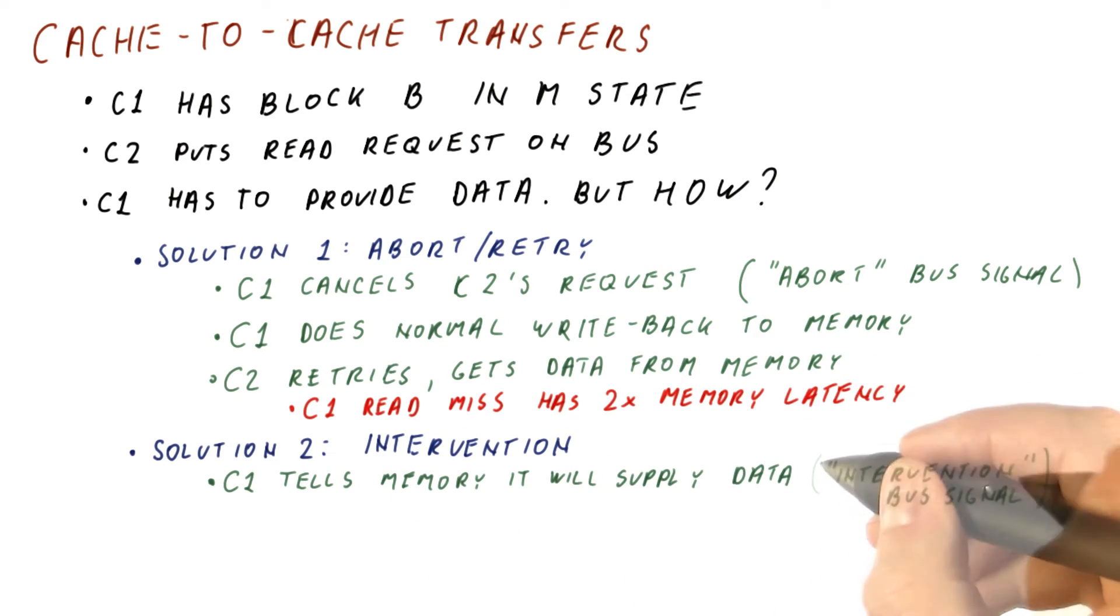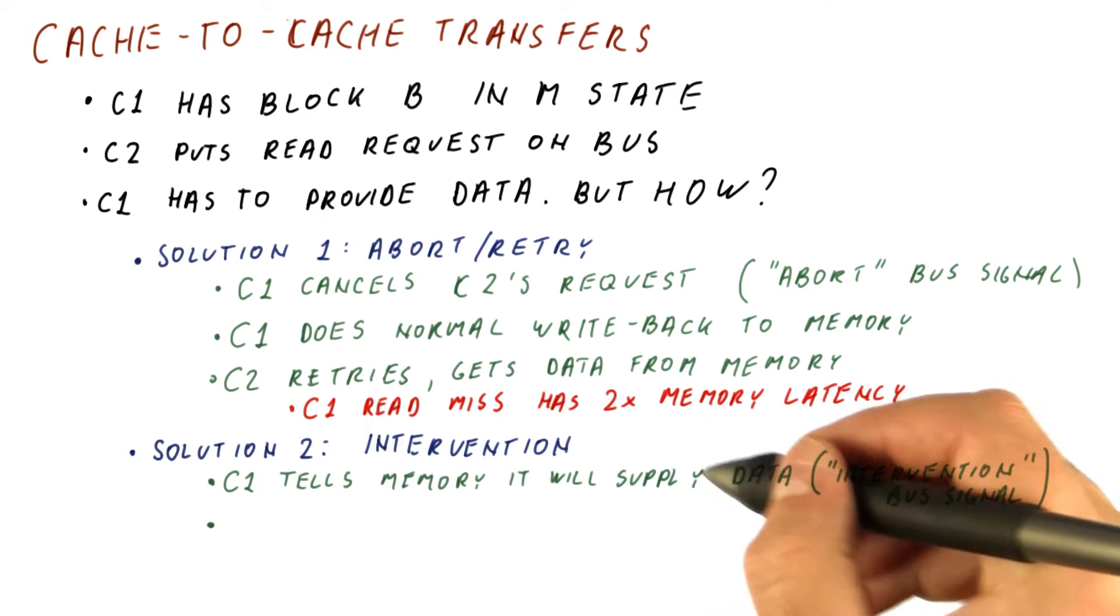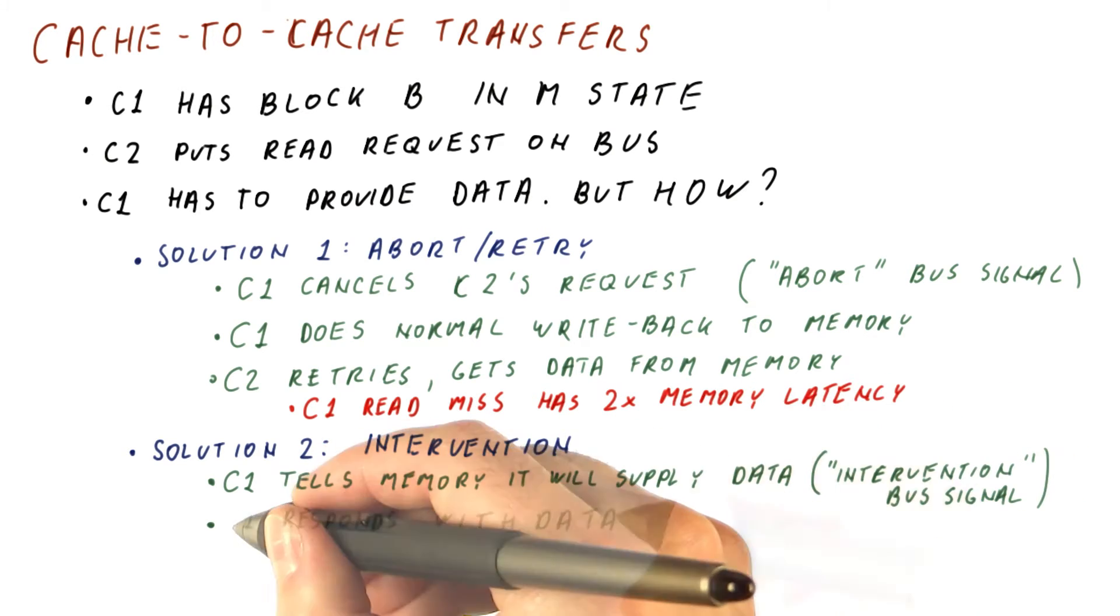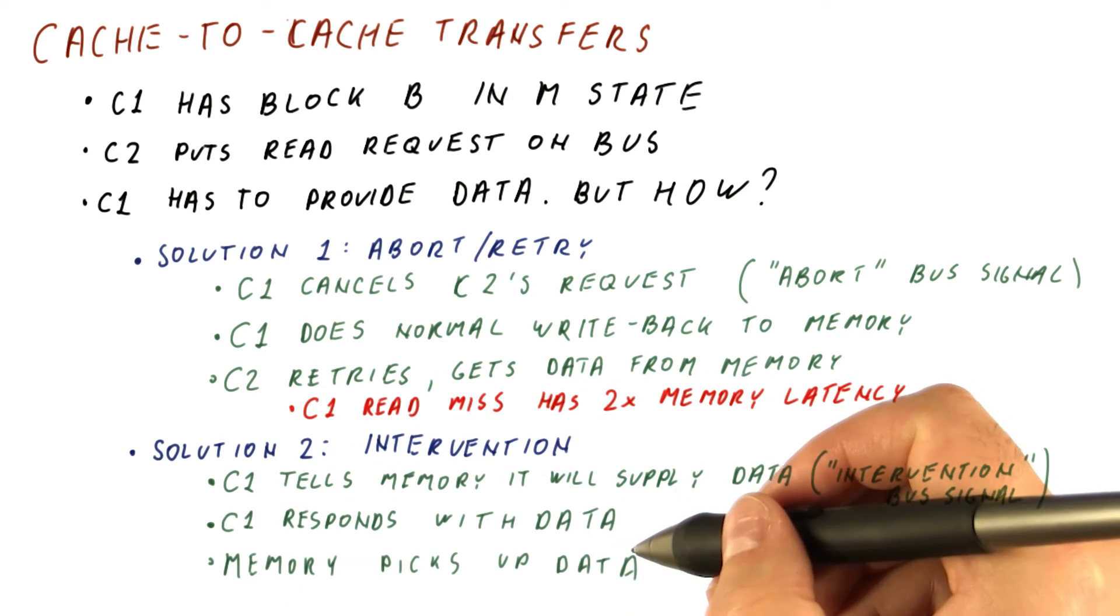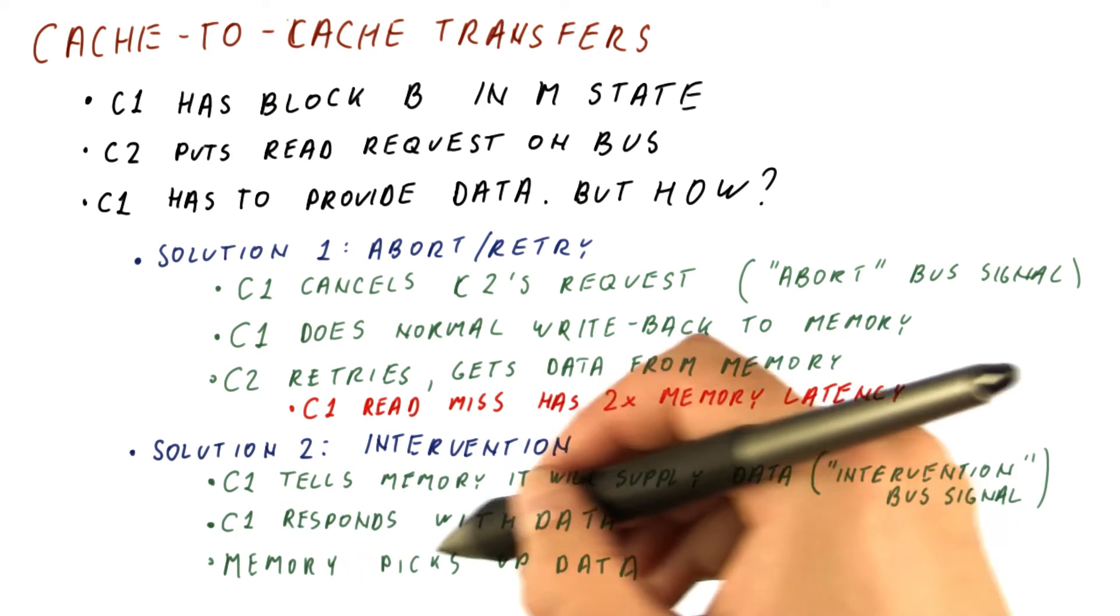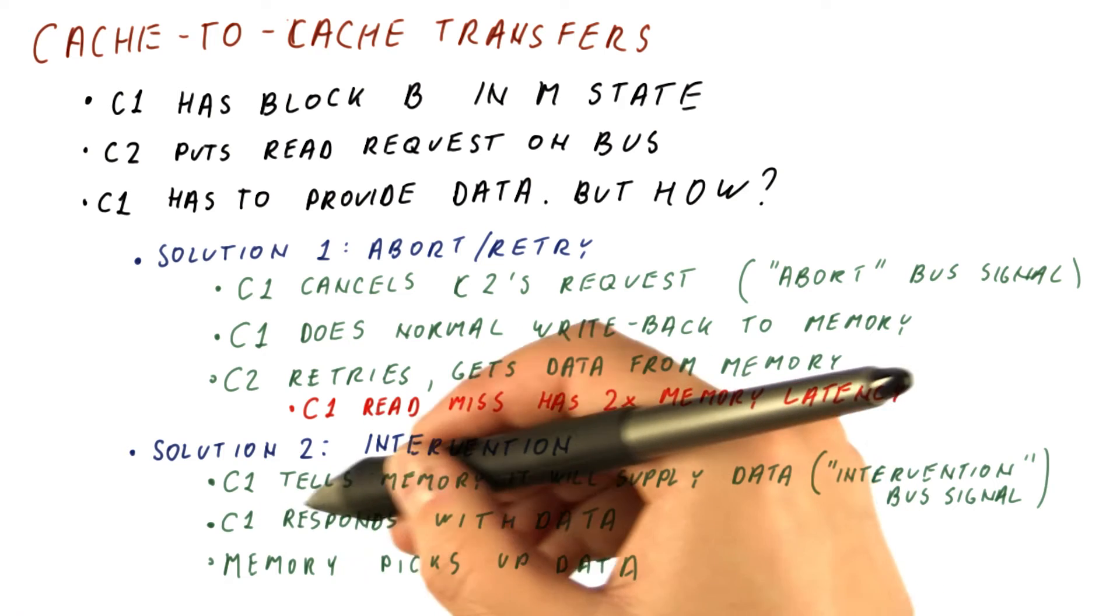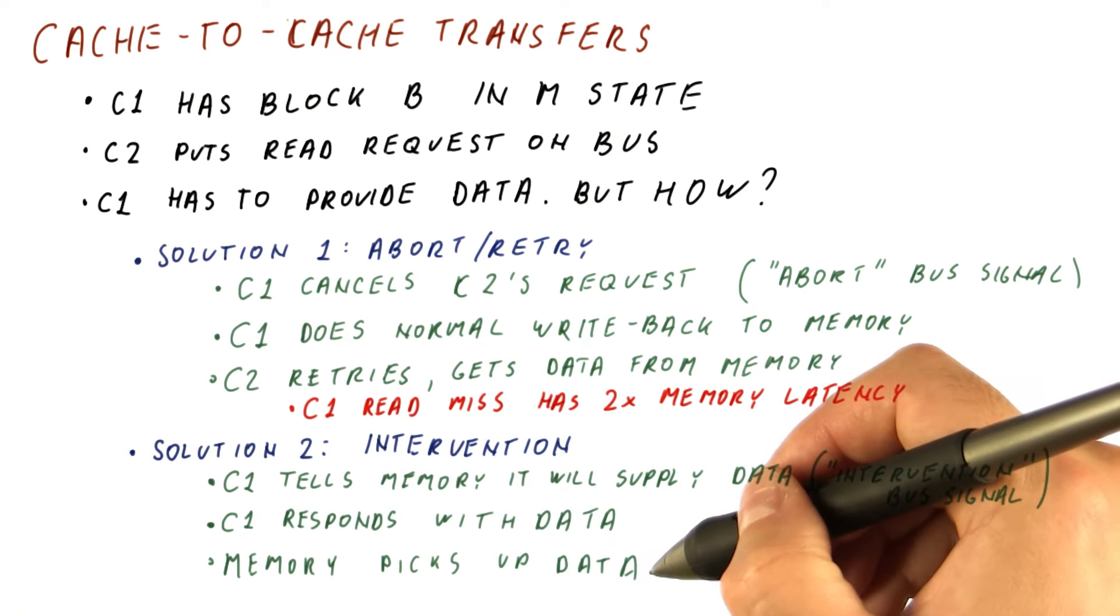And for that, we need an intervention bus signal through which C1, by asserting the intervention signal, signals to the memory not to respond. So the memory now doesn't respond with the data, but C1 does. And now, the memory must pick up the data that C1 is responding with in order to put it in the appropriate memory block.